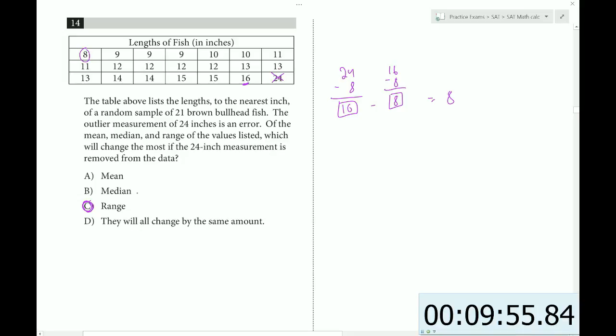If you compare to the median, the median is the middle number. It looks like 12 is going to be the middle number regardless of whether you eliminate the 24 or not. So that's out. And then the mean, the average is going to change slightly from eliminating the largest number, but it's not going to change that much. Now if this was, let's say, a hundred thousand, then that would change the average quite a bit.